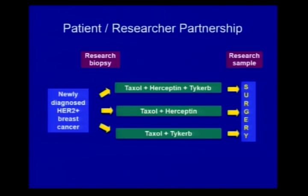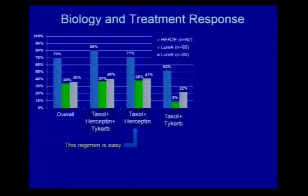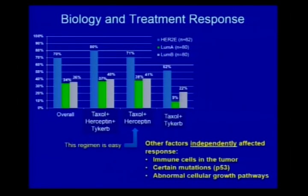This is a partnership between patient and researcher to get smarter. In a study I designed on neoadjuvant therapy in HER2-positive breast cancer, every patient allowed a research biopsy — 100%. We found that the HER2-enriched subtype had very high responsiveness regardless of which drugs we gave. It's not just the treatment — sometimes it's the underlying disease that matters most. We also found that immune cells in the tumor, certain mutations, and abnormal cellular growth pathways all contributed. There are non-drug factors that affect how a cancer responds.